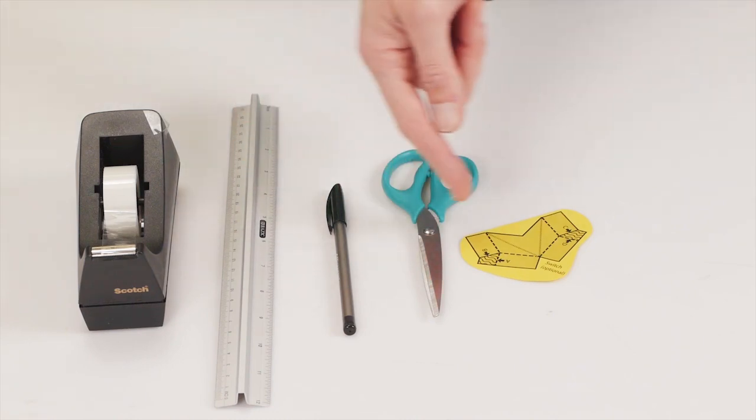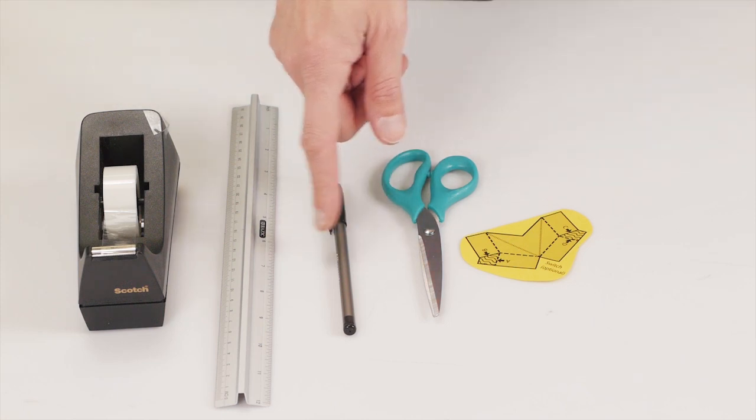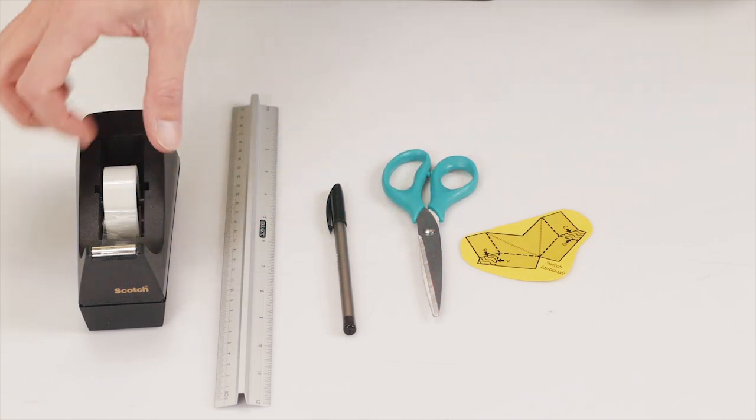To make the switch piece, you'll need a switch, a pair of scissors, a pen for tracing, a ruler, and some tape.